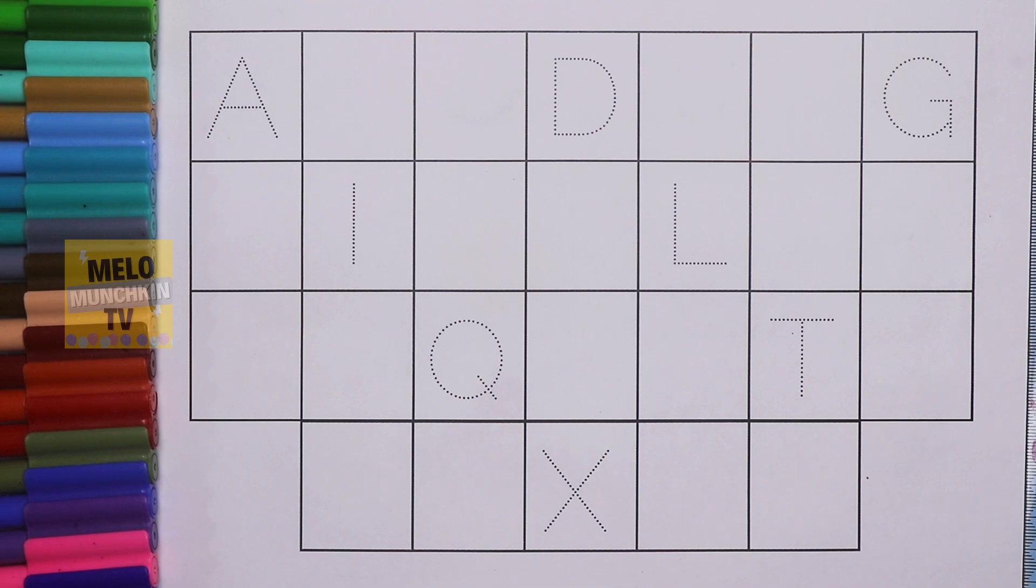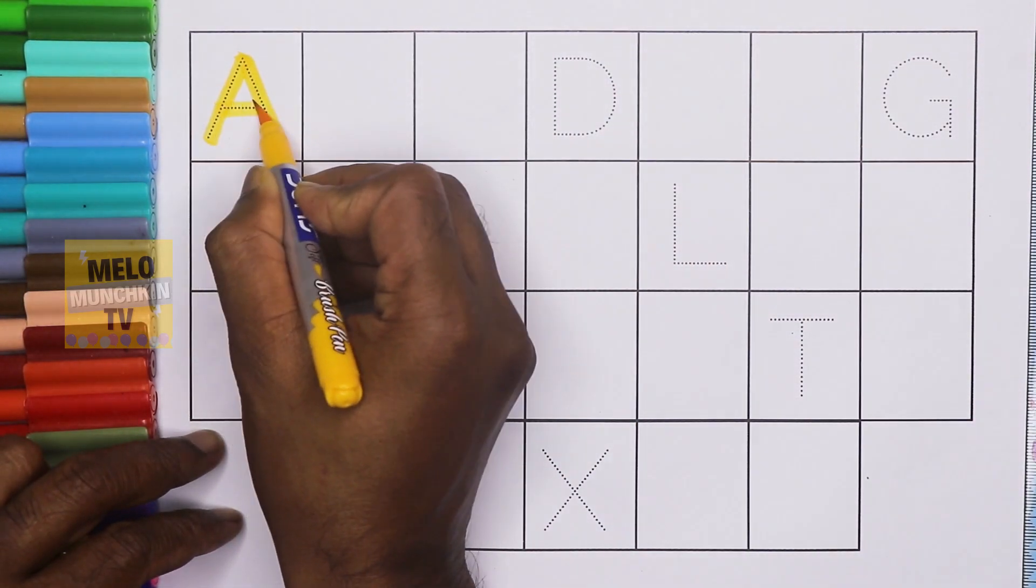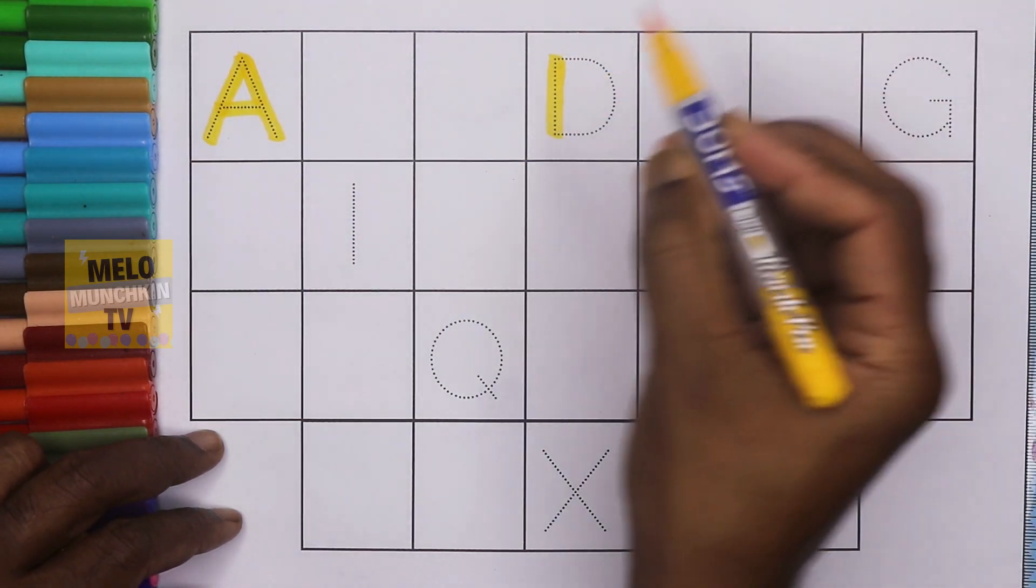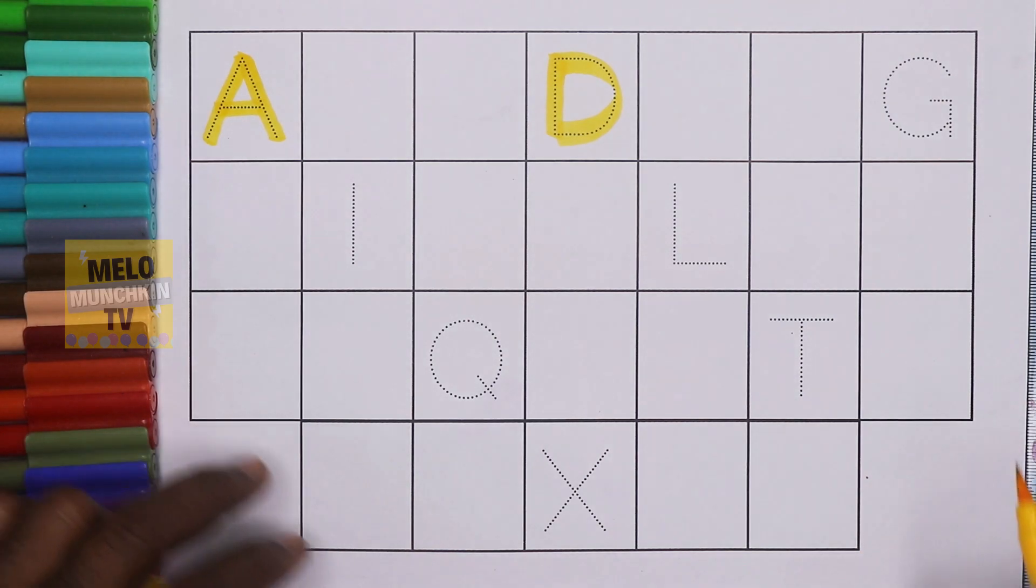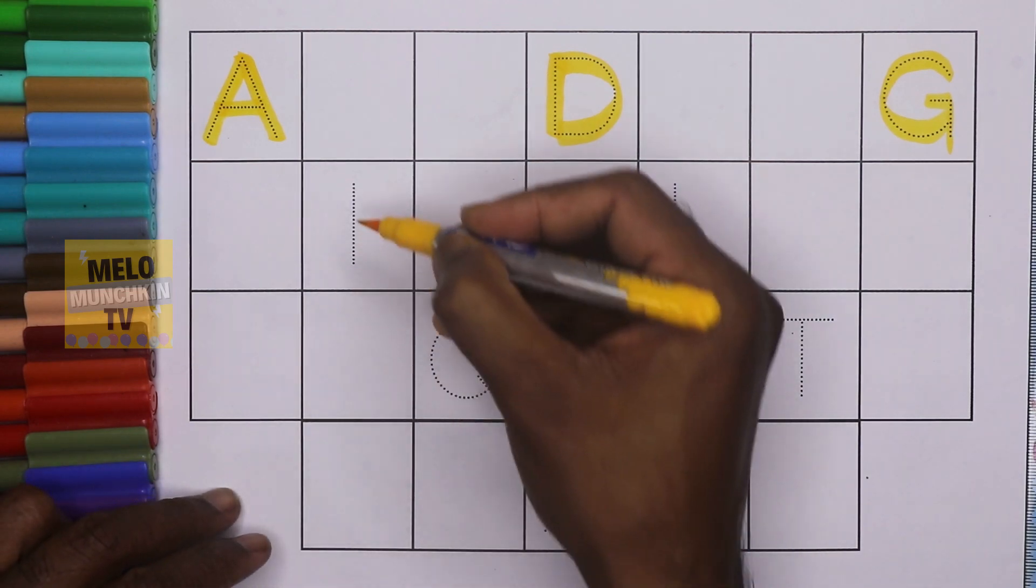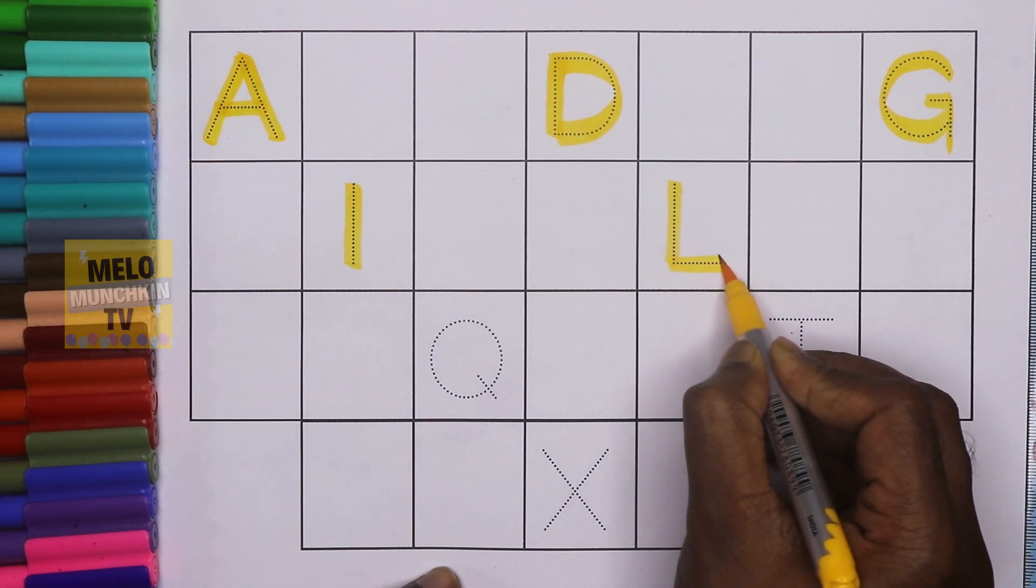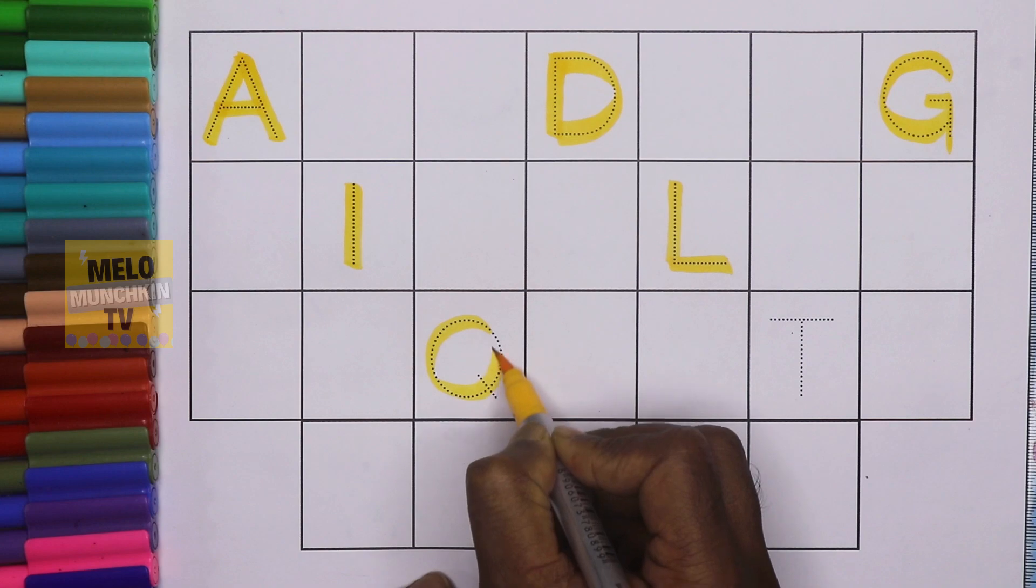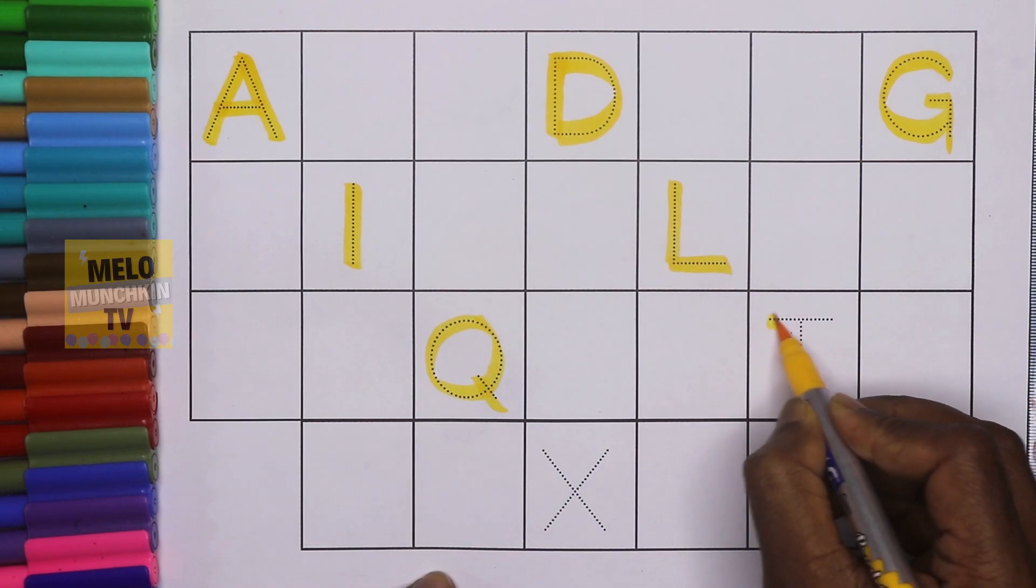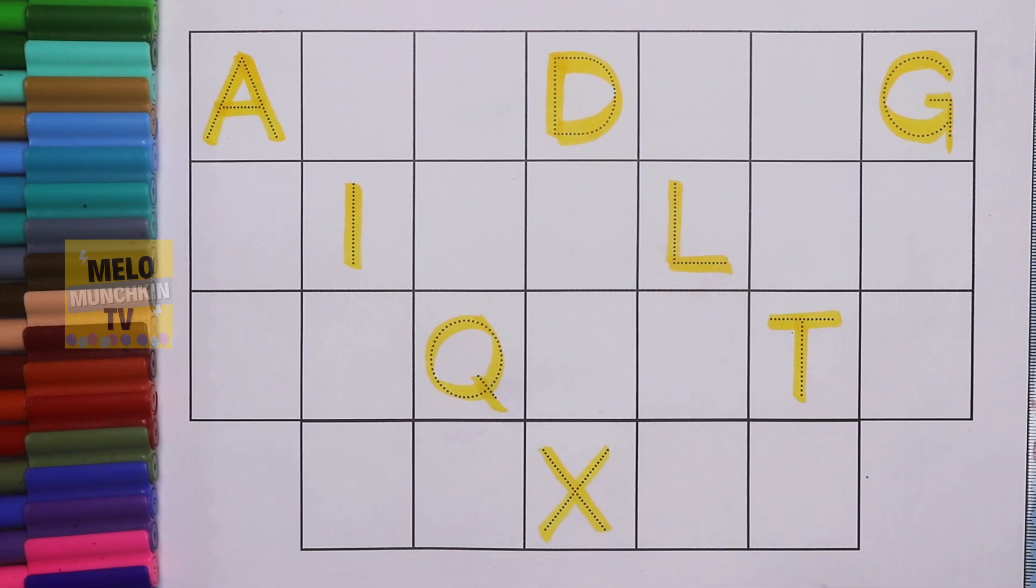Let's get started. To write the given letters, I'll use yellow color. A for apple, D for duck, G for gate, I for ice cream, L for lion, Q for queen, T for tiger, and X for xylophone. These are the letters given on the sheet. We need to find out the missing alphabets.